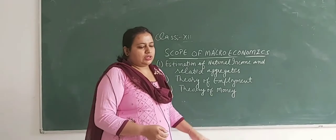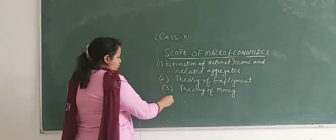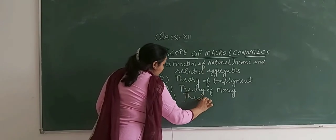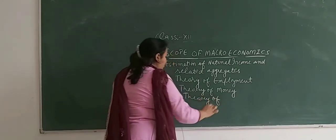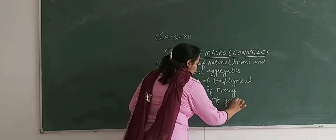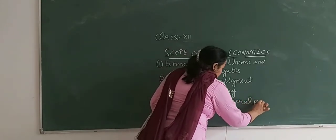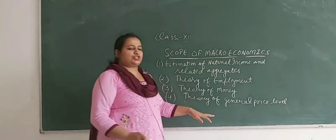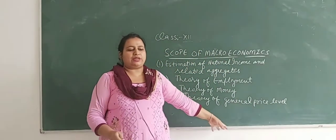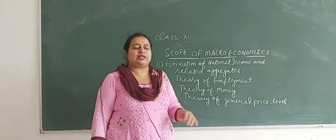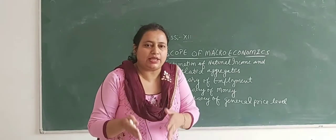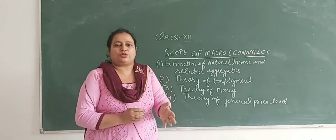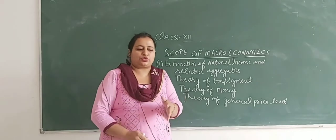Next is the theory of general price level, which is related to inflationary and deflationary gap. An inflationary gap means aggregate demand is greater than aggregate supply at a full level of employment. Deflationary gap is the opposite of inflationary gap.